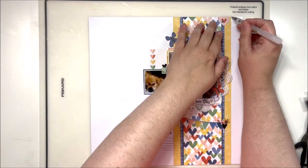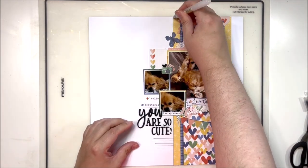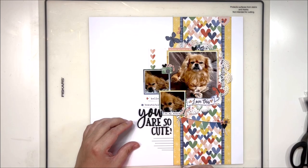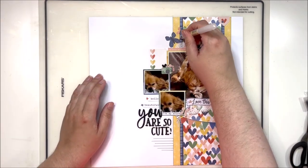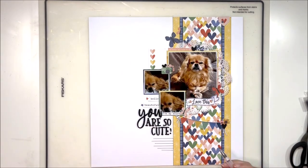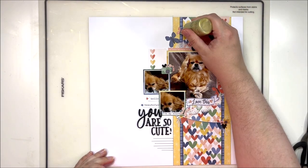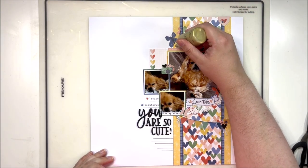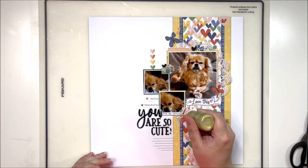I am going to add some journaling lines of course because I journal on just about every layout but especially on a layout like this one that has a really special memory attached to it. I definitely want to put in at least some small thoughts about the photos, of what's going on, why did I take the photos, things like that that you can include as well as the date. I do typically put the date that the photos were taken.